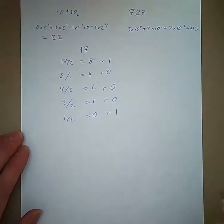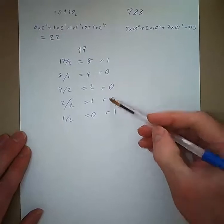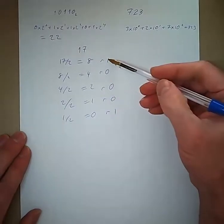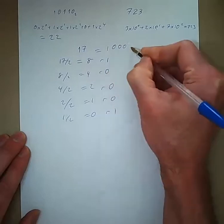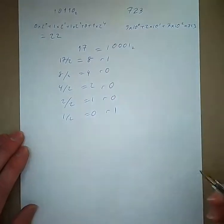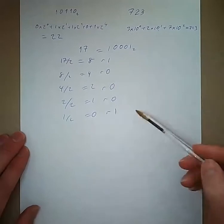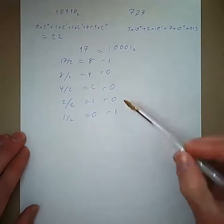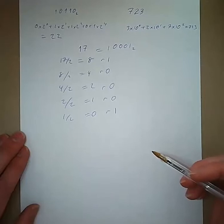The final step is to reverse the order of the remainders. So this is 1, 0, 0, 0, 1 in binary. I say it wasn't a good example because it's symmetrical. It's a palindrome.